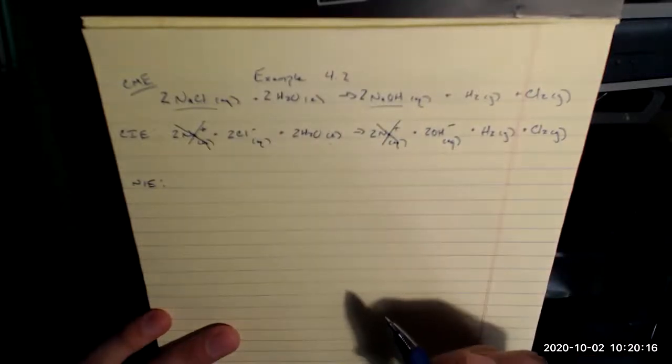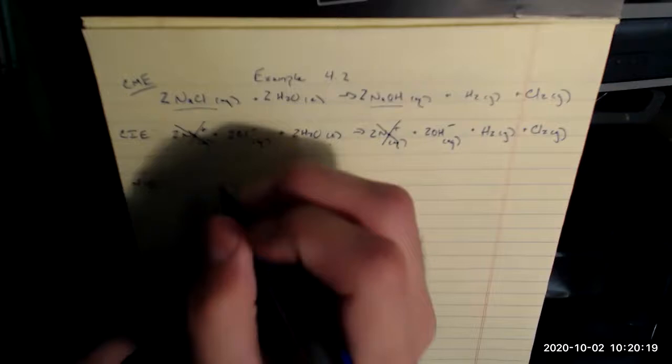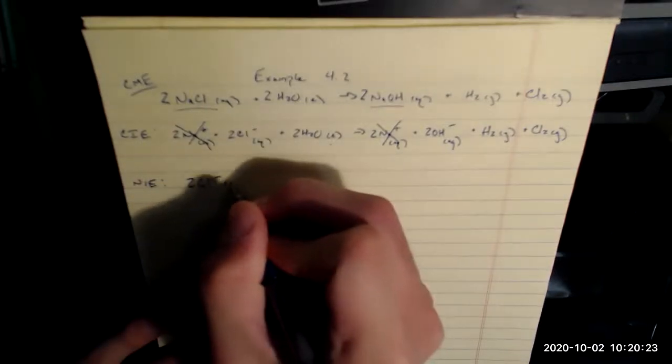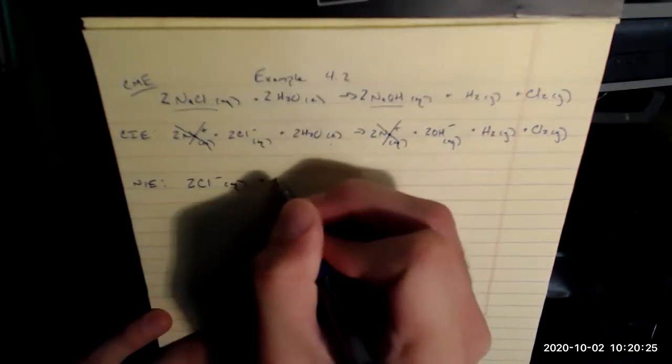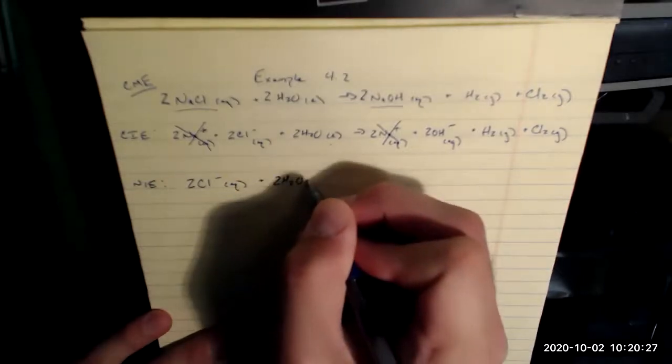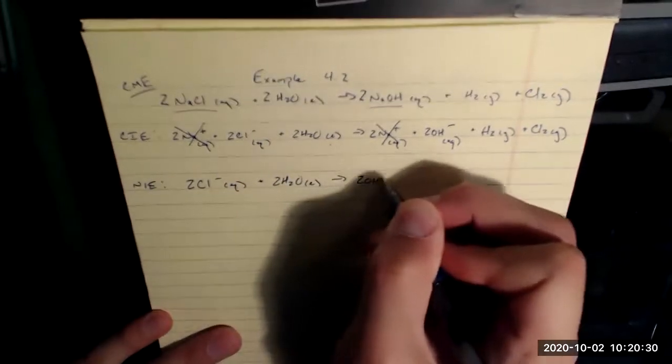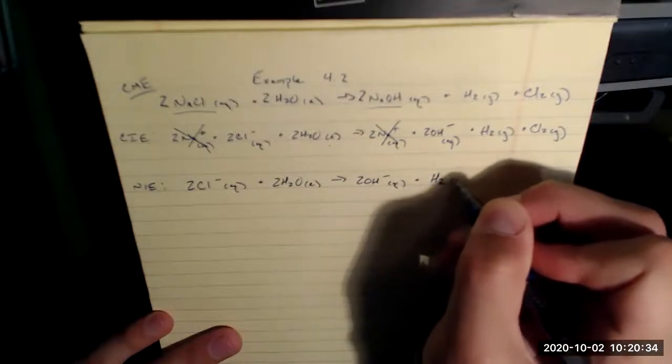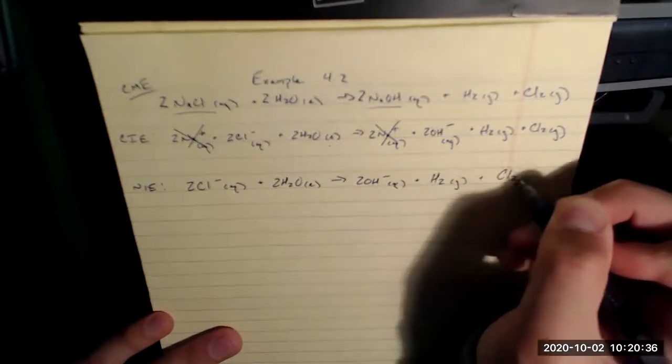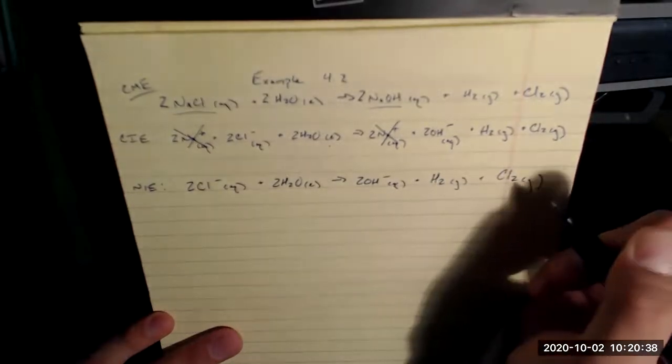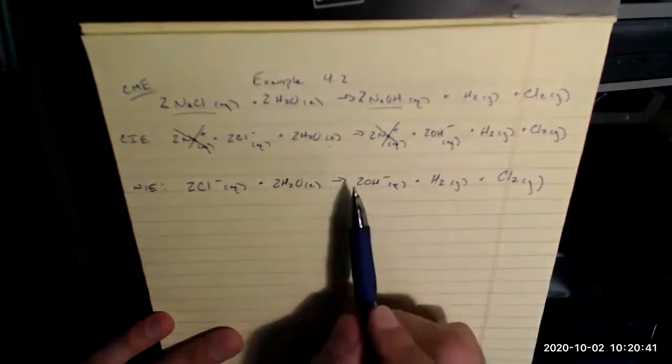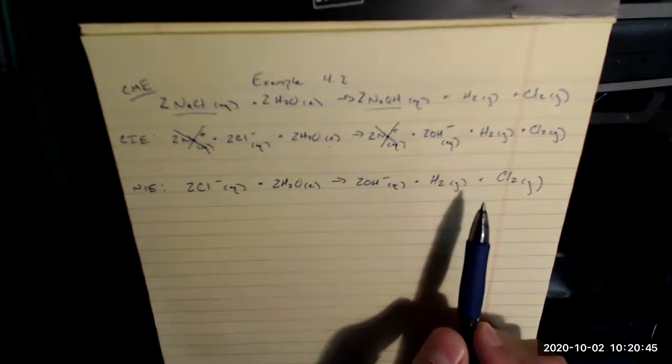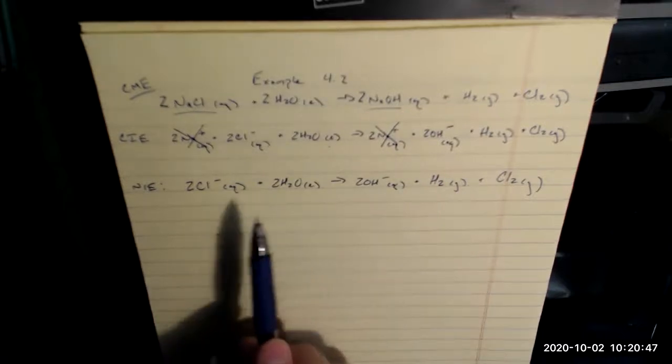So we don't meet those criteria. So I rewrite what I have left. Everything that's left over gives me my net ionic equation. 2 Cl minus aqueous plus 2 H2O liquid goes to 2 OH minus aqueous plus H2 gas plus Cl2 gas. I double check my ratio: 2 to 2 to 2 to 1 to 1. So that's good.